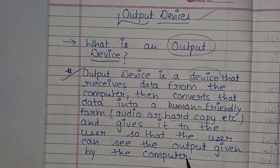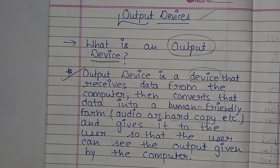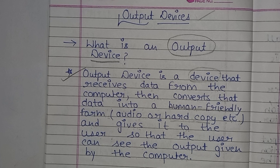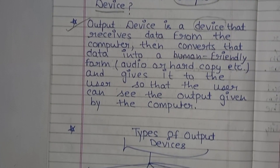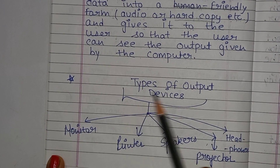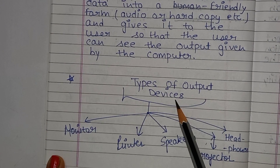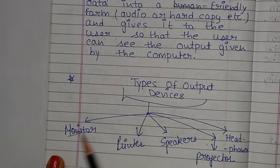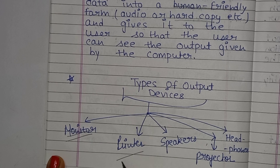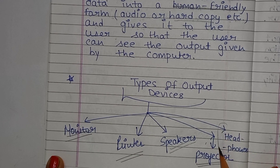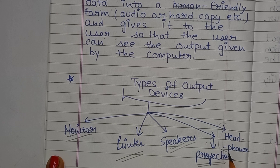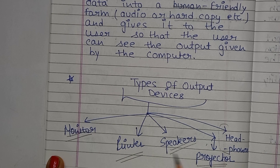Output devices are very many. In this class I will discuss 5 output devices with you. Types of output devices: monitor, printer, speakers, projector, and headphones. I will discuss each in detail.